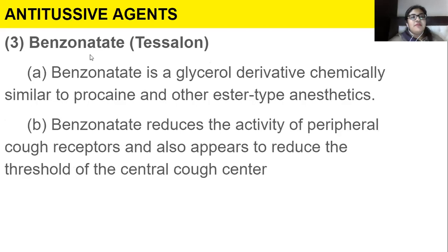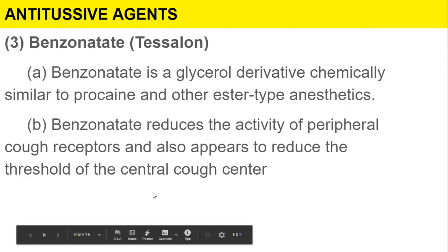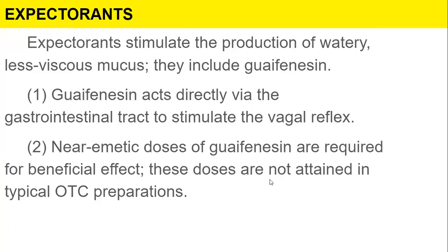Benzonatate is a glycerol derivative chemically similar to procaine and other ester-type anesthetics. It reduces the activity of peripheral cough receptors and also appears to reduce the threshold of the central cough center.